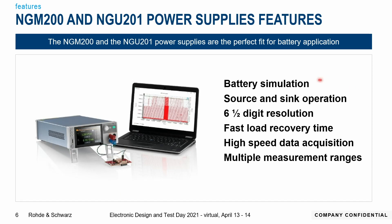There are many features these instruments have, but there are a few I'd like to go a little deeper into. Obviously there's the battery simulation itself. You also need to have a two-quadrant operation so you can not only source but also sink current. There's six-and-a-half digit resolution for quite accurate measurements, a fast load recovery time, high-speed data acquisition, and multiple measurement ranges to measure even those very low sleep currents.